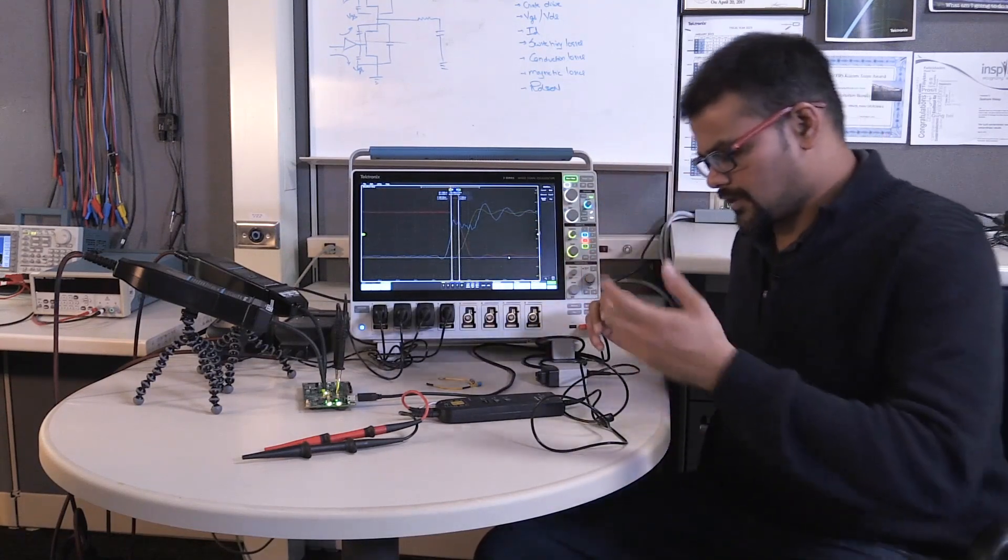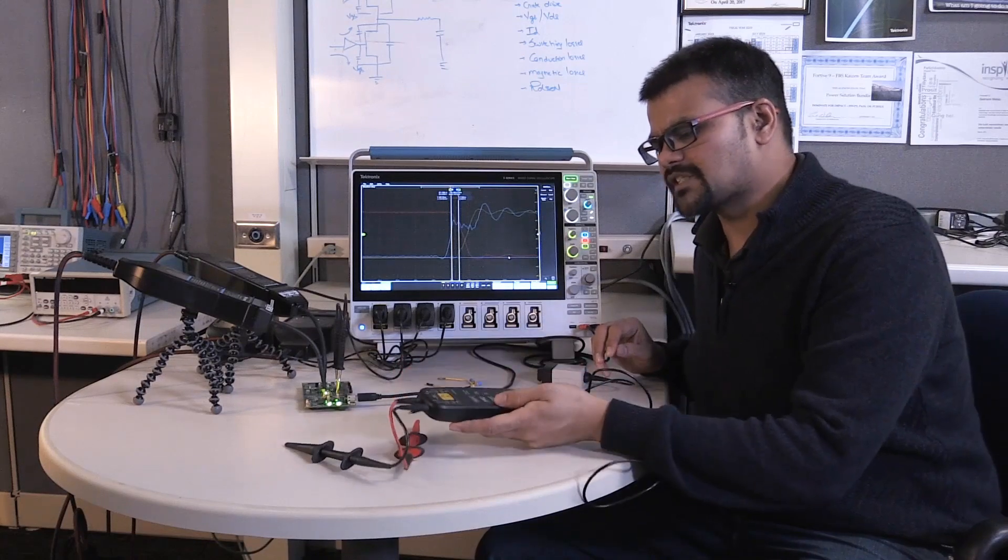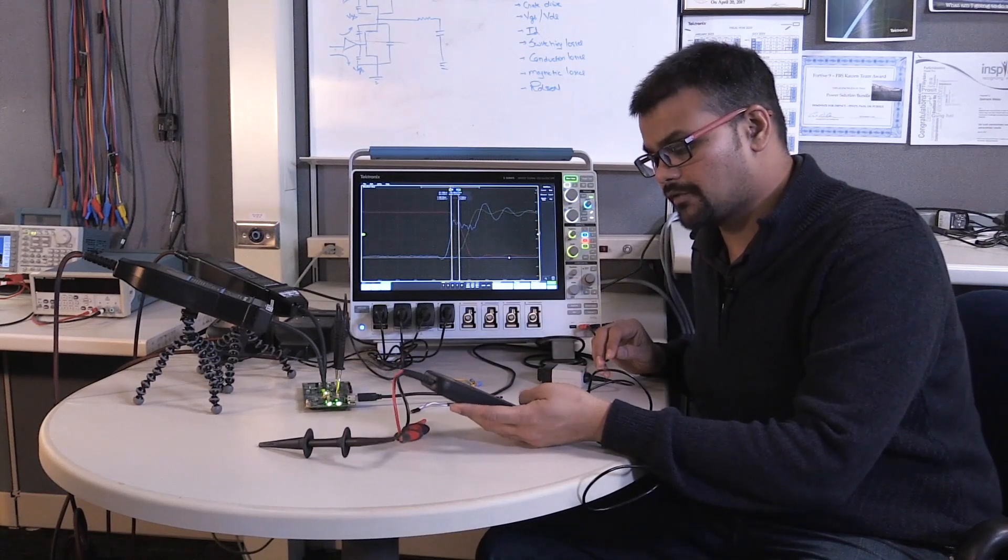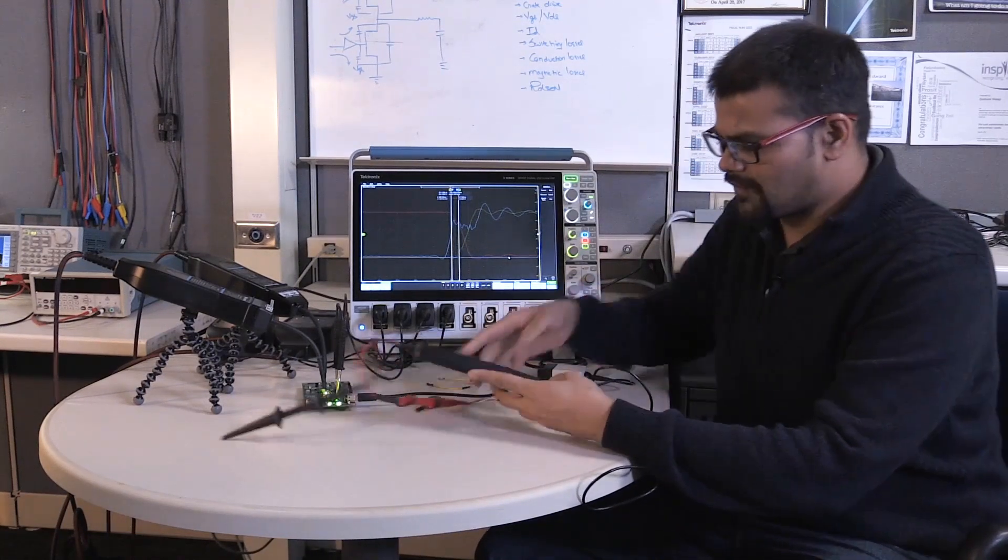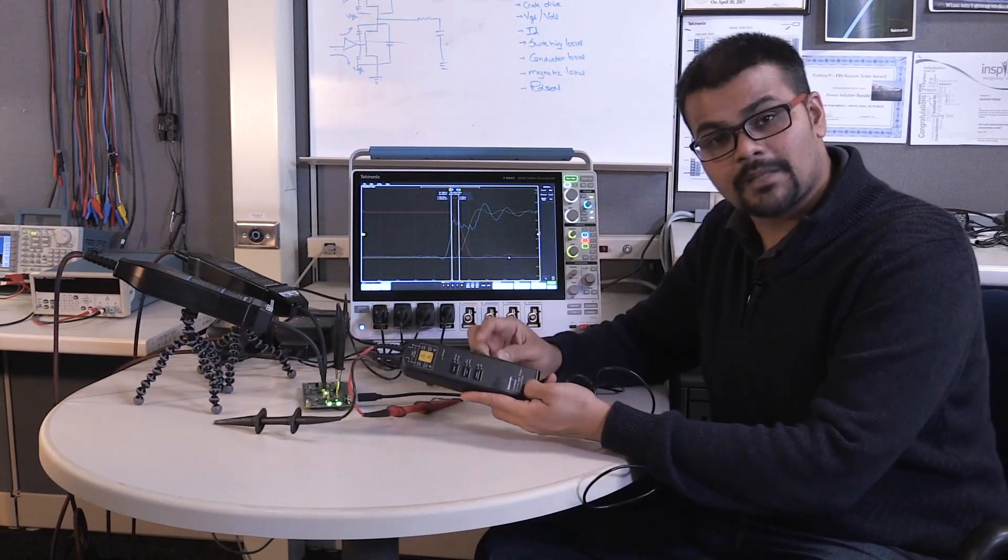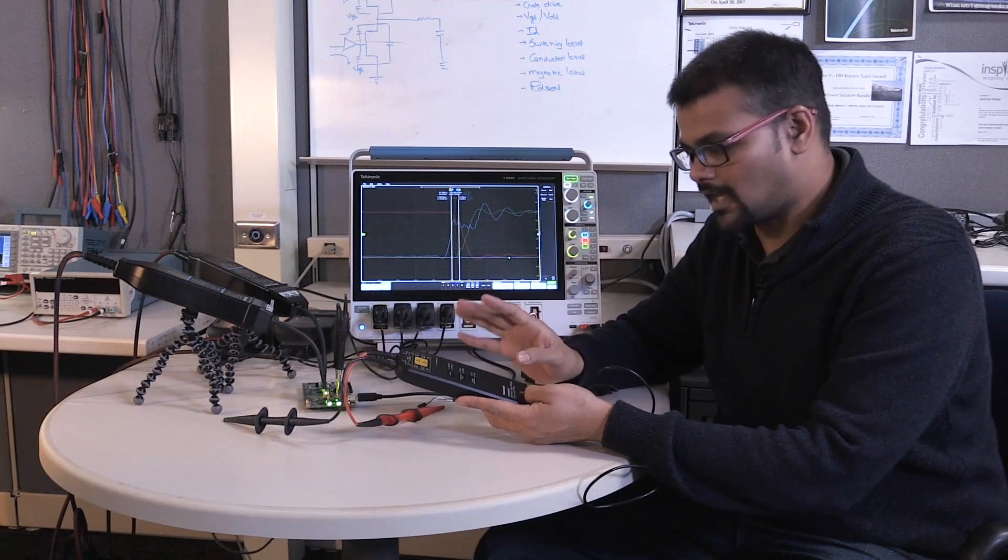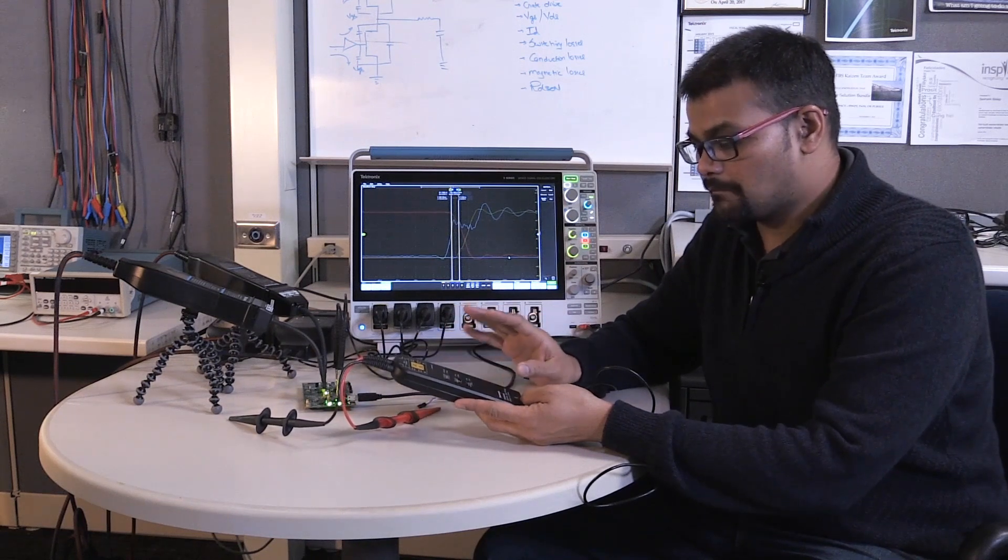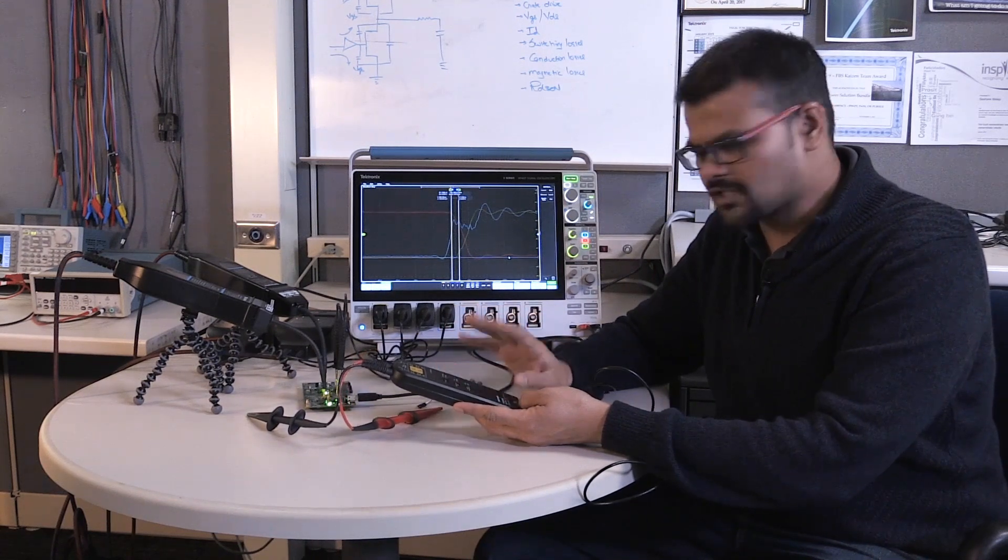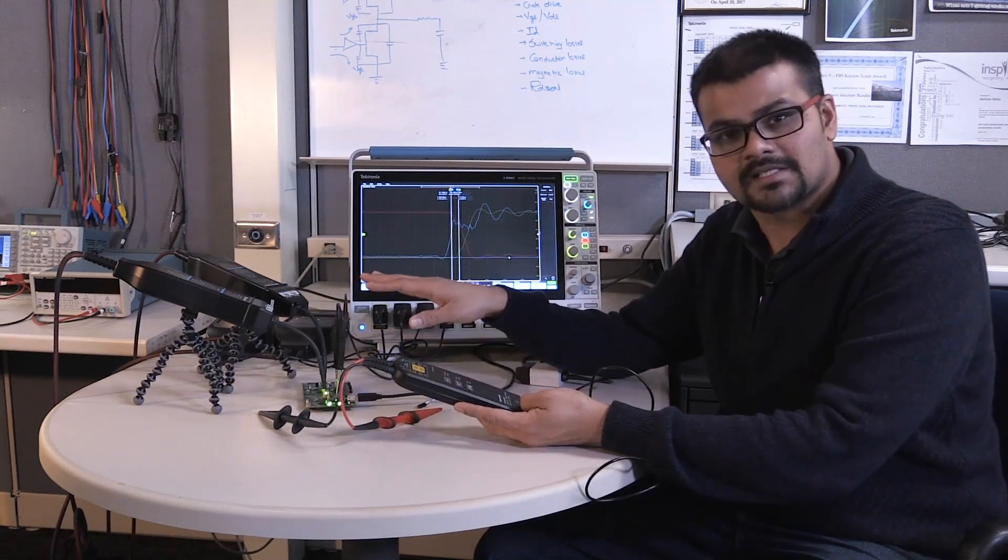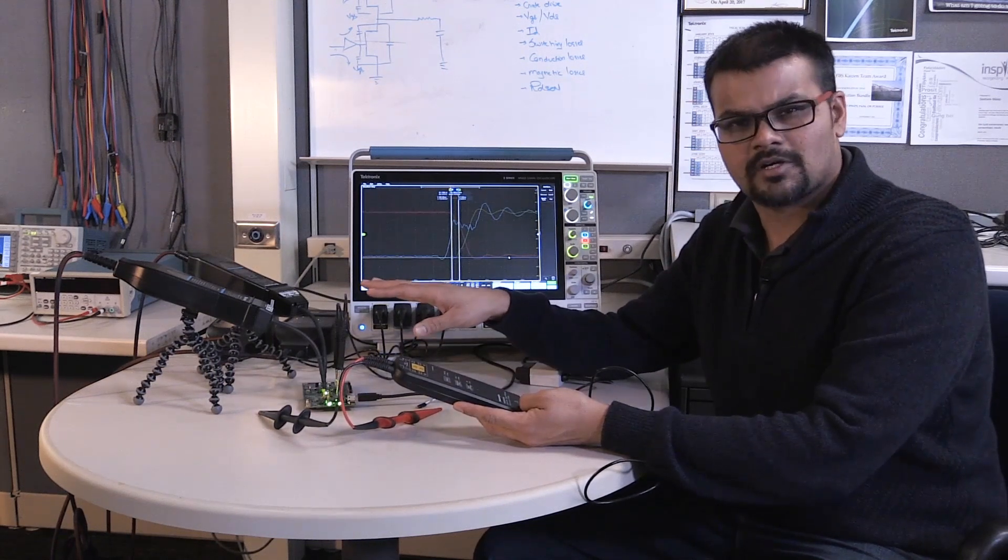One of the things I've seen people do, and this is not as common for VGS measurement, but people use these differential probes for VDS measurements. What I have here is a TMDP200. This is a 200 megahertz probe, so it's not a slouch by any measure. Really good probe.